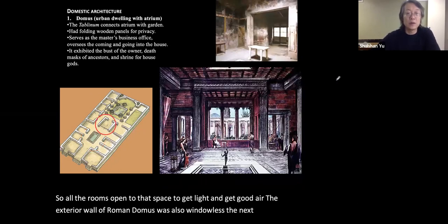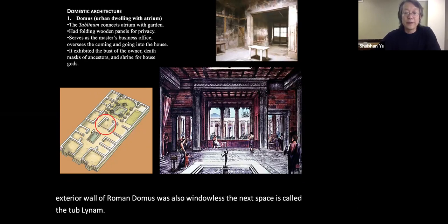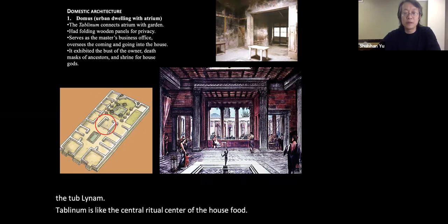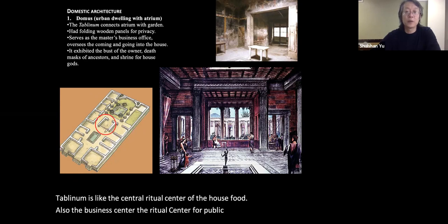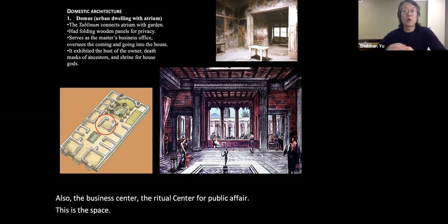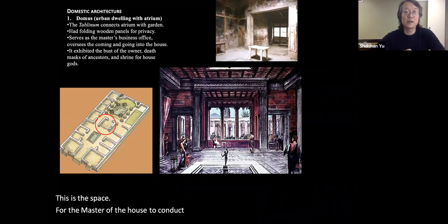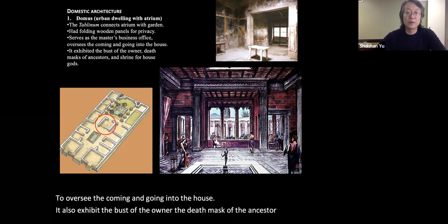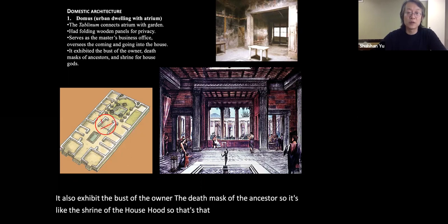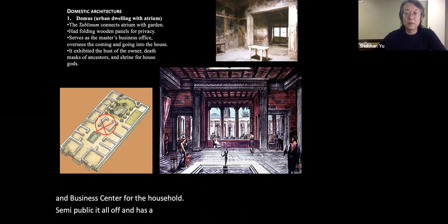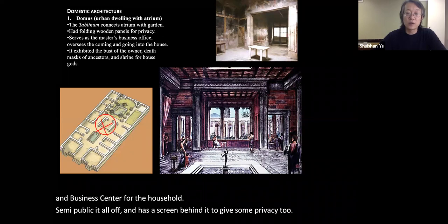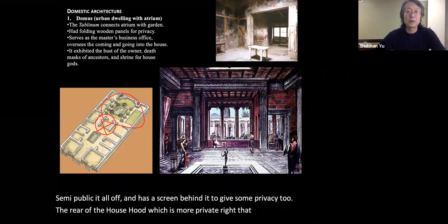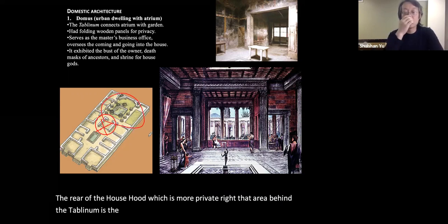The next space is called the tablinum — the central ritual and business center of the household, where the master of the house conducted business, like his office, overseeing the coming and going into the house. It also exhibited the bust of the owner and the death masks of ancestors, making it a shrine of the household — a ceremonial and business center. It often had a screen behind it to give some privacy to the rear of the house, which is the most private area.